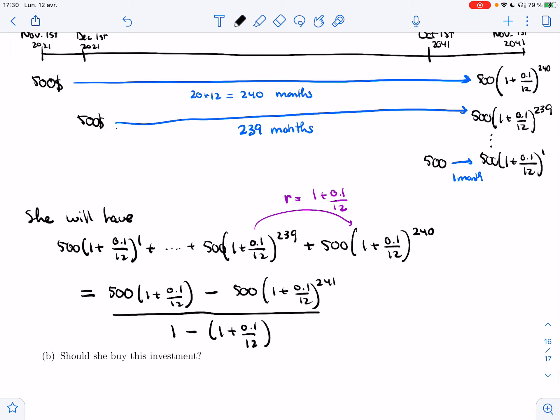So let's put that in a calculator. So I will get 500(1 + 0.1/12) minus 500 times (1 + 0.1/12)^241. And then I'm going to divide all of this, don't forget the parentheses here, by 1 minus (1 + 0.1/12). So let's see if what I got makes sense. I got $382,848.43.